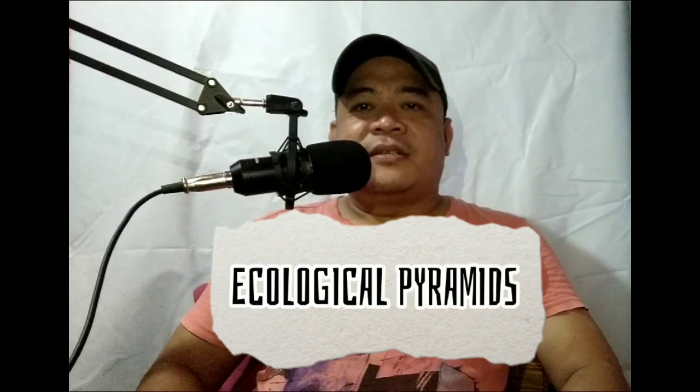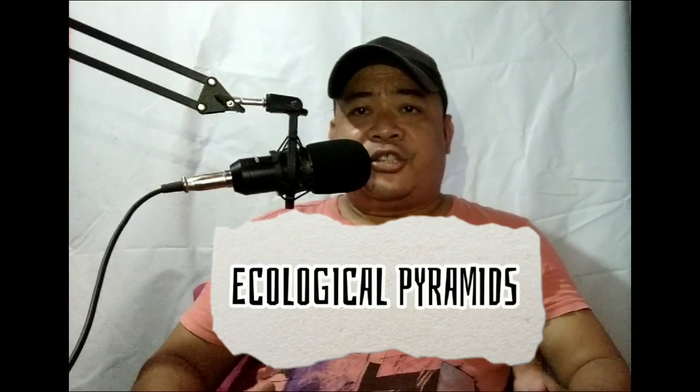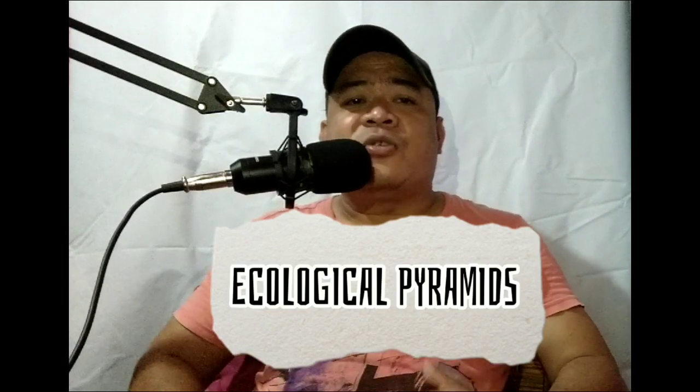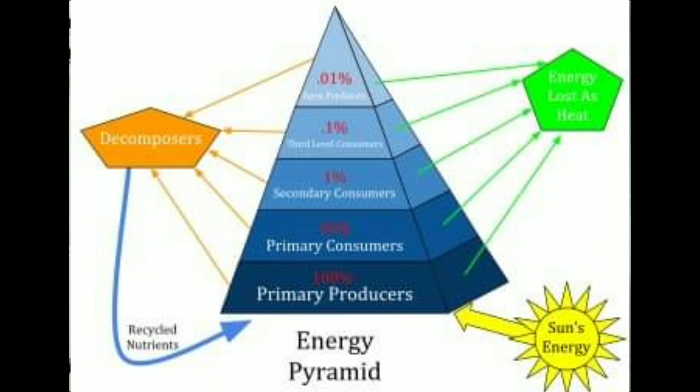We have the ecological pyramids. It shows how energy flows through the ecosystem. The energy pyramid shows the amount of energy that moves from one feeding level to another in a food web. Only 10% of the energy is passed on to the next level. The most energy is available at the producer level of the pyramid. As you move up the pyramid, each level has less energy available than the level below.